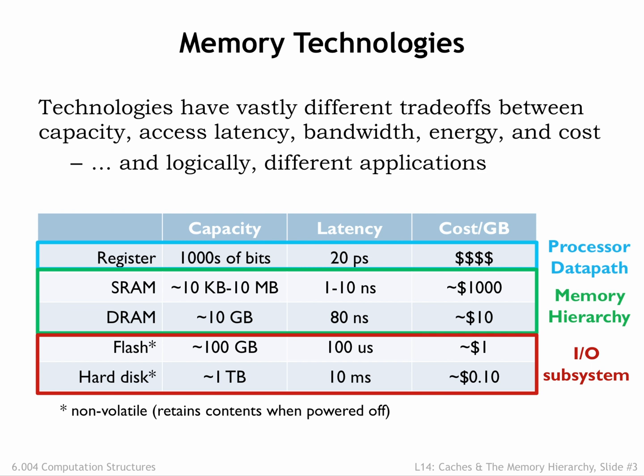Flash memory and hard disk drives provide non-volatile storage, meaning the memory contents are preserved even when the power is turned off. Hard disks are at the bottom of the memory hierarchy, providing massive amounts of long-term storage for very little cost. Flash memories, with a 100-fold improvement in access latency, are often used in concert with hard disk drives — in the same way that SRAMs are used with DRAMs — to provide a hybrid system for non-volatile storage with improved latency and high capacity. Let's learn a bit more about each of these four memory technologies, then we'll return to the job of building our memory system.